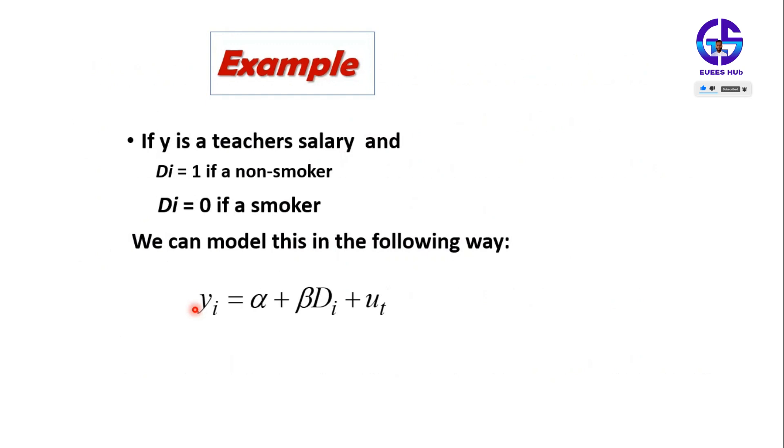For example, if y is a teacher's salary and Di equals 1 if a non-smoker and Di equals 0 if a smoker, we can develop the model. When the dummy variable equals 1, it represents one case. When the dummy variable equals 0, it represents the other case.